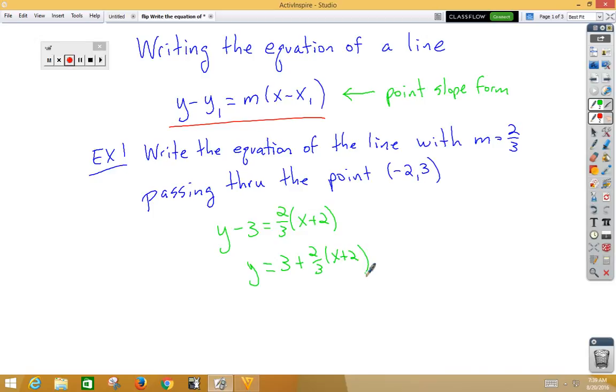It's also possible that we would write that in standard form, so we could start with our original answer. We could kill the fraction by multiplying the 3 to the other side. That would give us 3y minus 9 is equal to 2 times x plus 2.